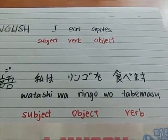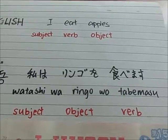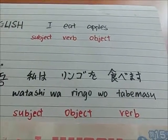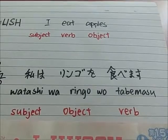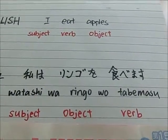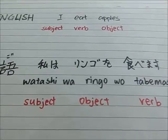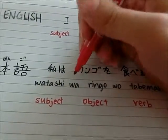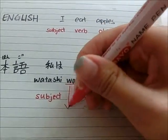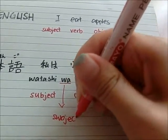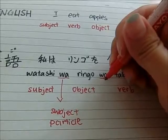'Wa' is actually a particle — they're called particles. The subject particle is attached to the subject to show that it is one. Then 'ringo' is apples or just an apple. 'Wo' is the object particle. So 'wa' is the subject particle.